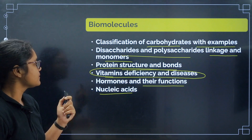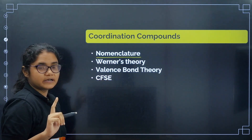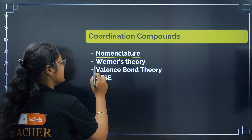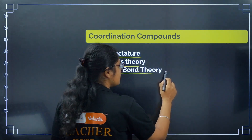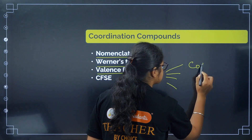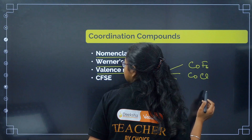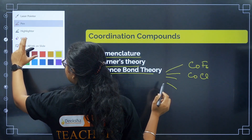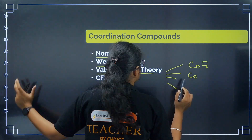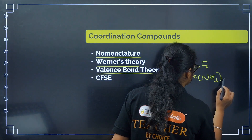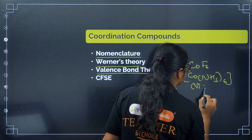In inorganic chemistry, coordination compounds are very very important. Focus on nomenclature and know all the rules. Cover Werner's theory — primary valency, secondary valency — and valence bond theory for the compounds given in NCERT: [CoF₆]³⁻, [Co(NH₃)₆]³⁺. Know their magnetism, hybridization, shape, and all properties.